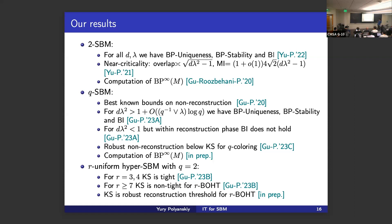Very recently we also started understanding the hypergraph SBM. For three and four, Kesten-Stigum is tight, but for above seven it looks like it won't be tight. Five and six we don't know yet — and this is not a physics simulation or conjecture; this is what we can actually prove so far. I want to spend time proving two results, and at the end I'll show some open problems.